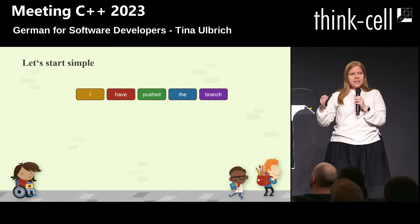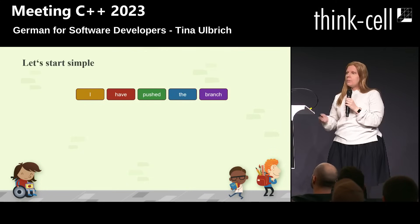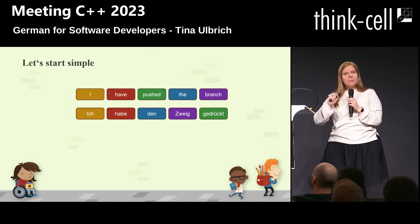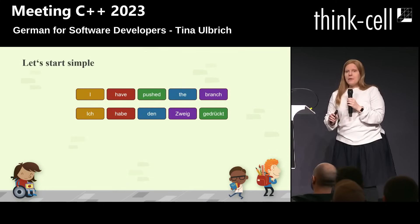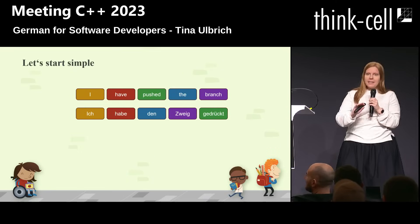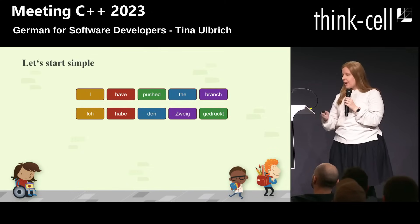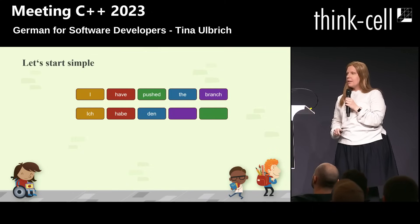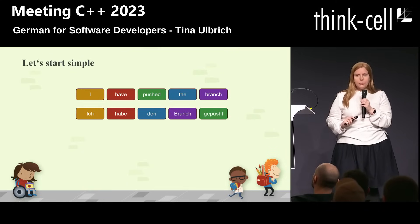If you would translate this word by word into German, it would be something like, "Ich habe den Zweig gedrückt." But this is bad. That's not how we speak. That's not how we say it. We actually say, "Ich habe den Bransch gepusht."